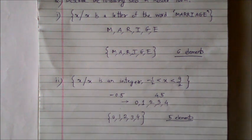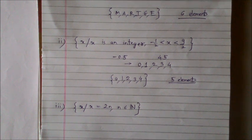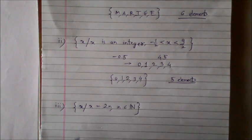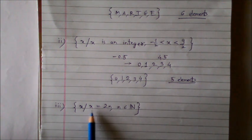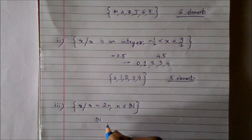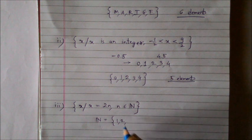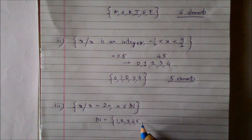Now both these examples had a finite number of elements, six and five respectively. Now let's solve another problem. This is slightly complicated which says find all those values of x such that x is 2n and n is the set of natural numbers. First let us write down the set of natural numbers which is an infinite set. This will be one, then two, three, four, five, and so on.